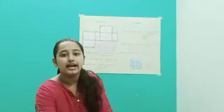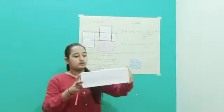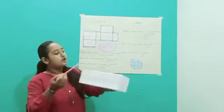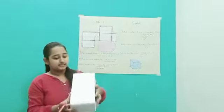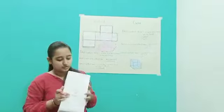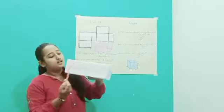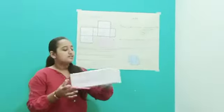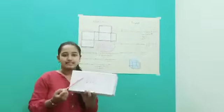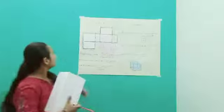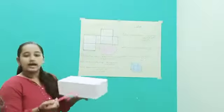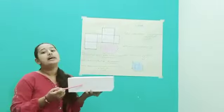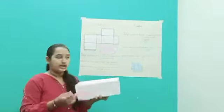I have a cubical box here and a cuboidal box here, whose all the surfaces are rectangles. As you can see, this is also rectangle, this is also, and this is also. I have made a diagram here: this is length into breadth, this is breadth into height, and this will be length into height.